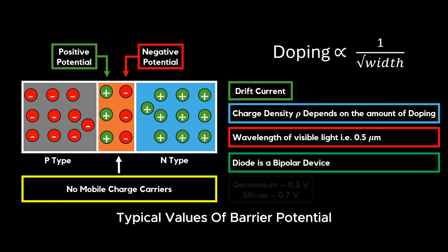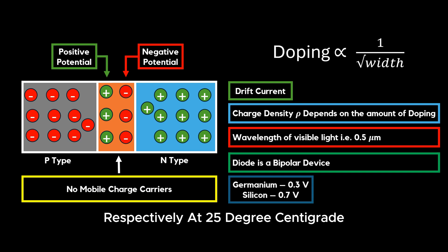Typical values of barrier potential voltages of germanium and silicon are 0.3 volts and 0.7 volts, respectively, at 25 degrees Celsius.